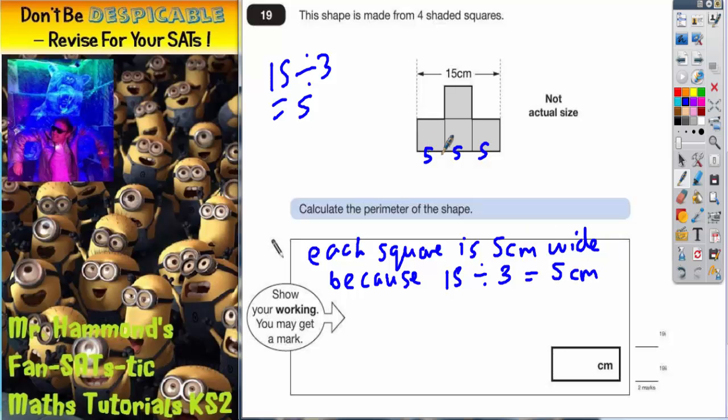Now, once you know that each square is five centimeters wide, all the sides on the square are the same because that's true for any square. So this must be five, this must be five, this is five, this is five, this is five, and this is five. You may notice I've only written fives around the outside of the shape because remember, the perimeter is around the outside. We're not interested in the lines on the inside.